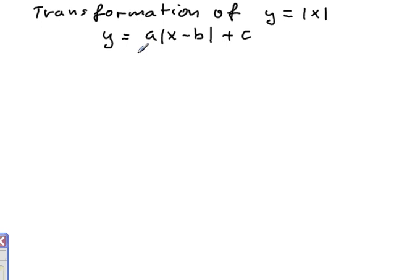And when the value of a is between zero and one, a fraction, then the slope value is causing the graph to grow very slowly.